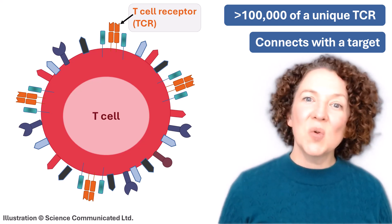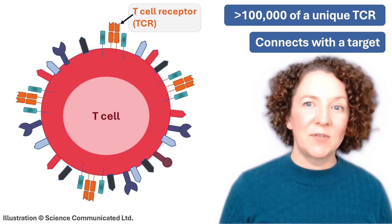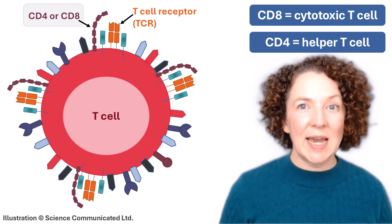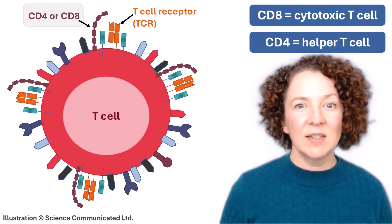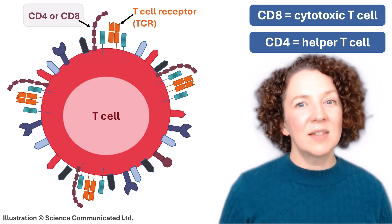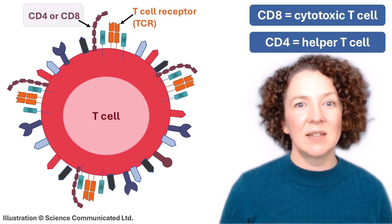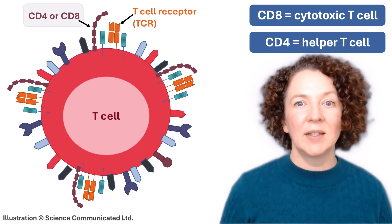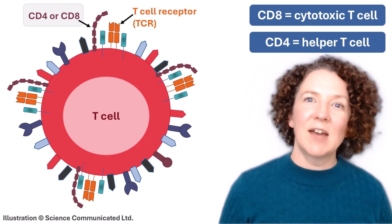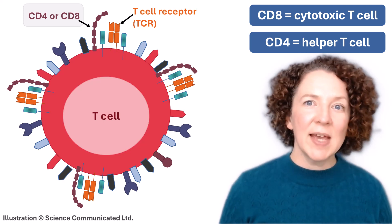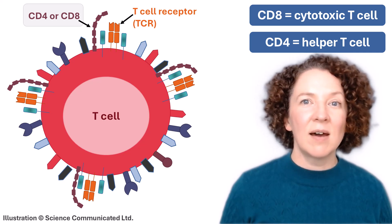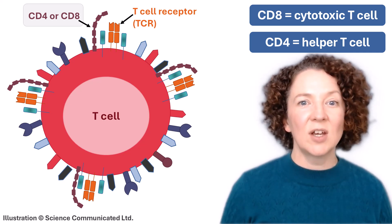These are the receptor proteins that T cells use to connect with a cell it wants to destroy. T cells also come in different types. If they have a protein called CD8 on their surface, they are cytotoxic T cells which can kill other cells directly. If they have CD4 on their surface, they're helper T cells and they guide and coordinate other white blood cells.